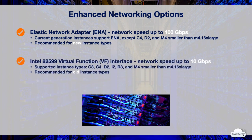Intel 82599 VF interface can provide network speeds up to 10 gigabits per second. It's recommended only for old instance types. You can enable Intel VF interface on C3, C4, D2, I2, and R3 instance types, and M4 instances smaller than M4.16xlarge.